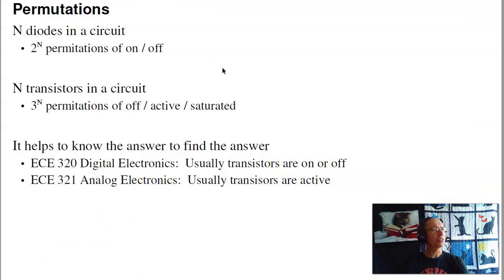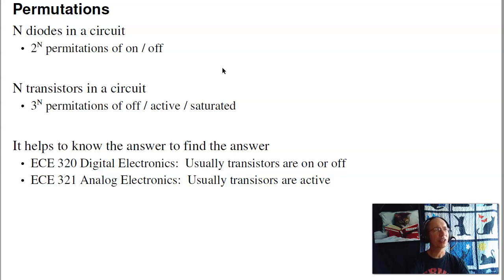One annoying thing about transistors: with diodes, if I have N diodes in a circuit, I've got 2 to the N permutations to consider, and one of those is correct. If I have a circuit with N transistors, there are 3 to the N permutations — each transistor could be off, active, or saturated. This is where it really helps to know what the answer is to find the answer. One of those permutations is correct; if you build the circuit, it'll do something — the trick is figuring out which one it is. One way to guess: if you're in ECE 320 digital electronics, the transistors are probably off or on — it's binary. In ECE 321 analog electronics, usually the transistors are in the active region, where a sine wave in gives a sine wave out — but that's not always the case.